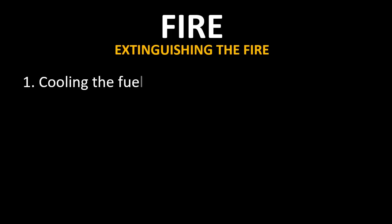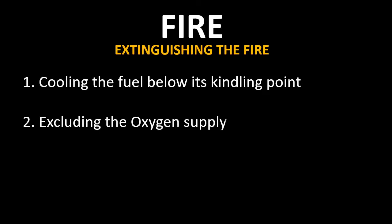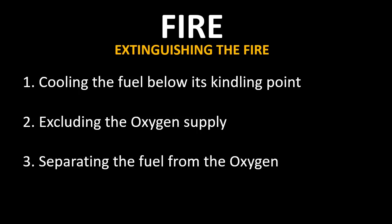Depending on the nature of the class of fire, the best method for suppression may be one of the following: number one, cooling the fuel below its kindling point; number two, excluding the oxygen supply; and number three, separating the fuel from the oxygen. These methods have led to the development of different types of extinguishers for different types of fires.